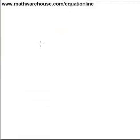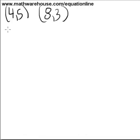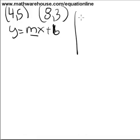Okay, let's find the equation of a line that passes through the point 4, 5 and 8, 3. Alright, if you remember the first thing that we're going to do is calculate the slope. We're looking for y equals mx plus b, and we're going to first find m, our slope.